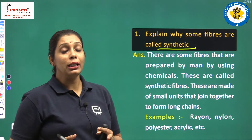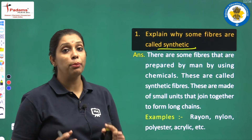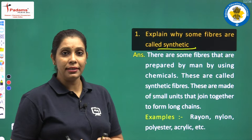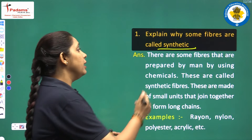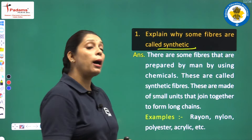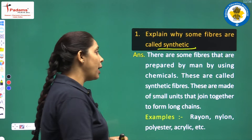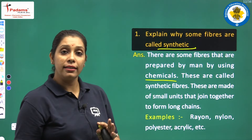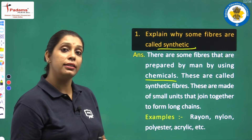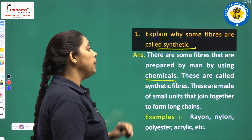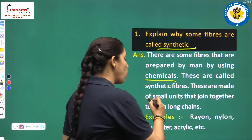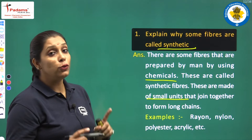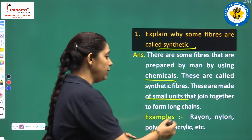We call them synthetic fibers because they are made of special petrochemical products. We have to write: there are some fibers that are prepared by man by using chemicals, and such fibers are known as synthetic fibers. These fibers are made of small units that join together to form long chains.